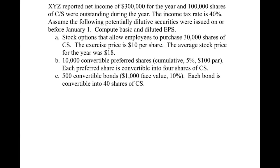So that being said, let's get going here. We've got net income of $300,000, 100,000 shares outstanding during the year. The income tax rate is 40%. And here's our potentially dilutive securities. We've got stock options that allow employees to purchase 30,000 shares of common stock. So here the exercise price is $10, market price average is $18. Therefore, we know that they are dilutive.